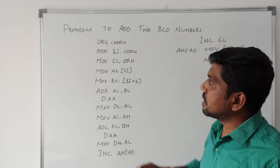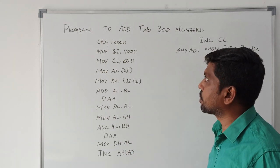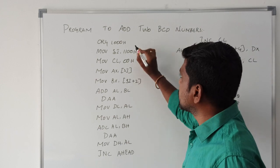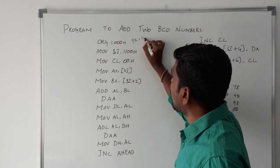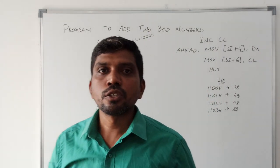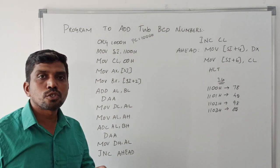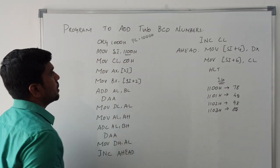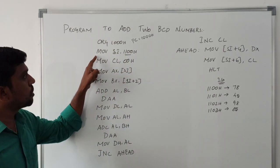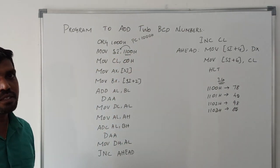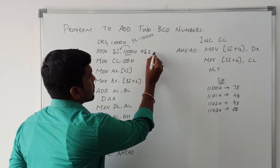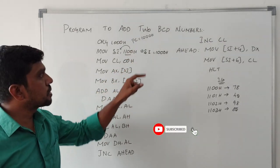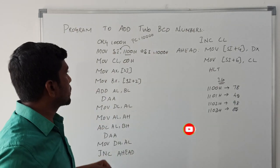Now I am going to explain the sequence of the program. The first instruction sets the program counter value — initializing the starting address of the program. The instruction is ORG 1000H, so the origin of the program is 1000H. After execution, the program counter value is set to 1000H. The next instruction initializes the source index register: MOV SI, 2100H. This is a 16-bit immediate value, so after execution, SI is loaded with 1100H. The third instruction initializes the carry register.